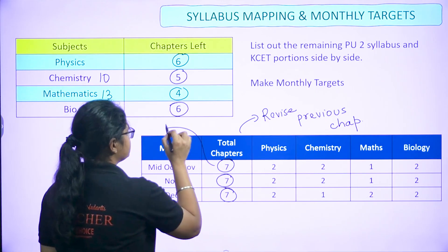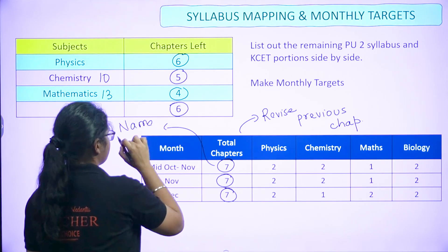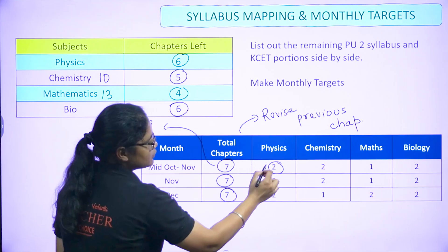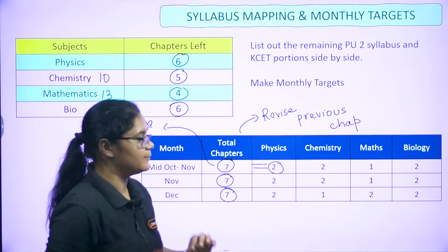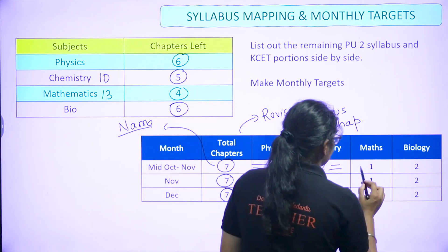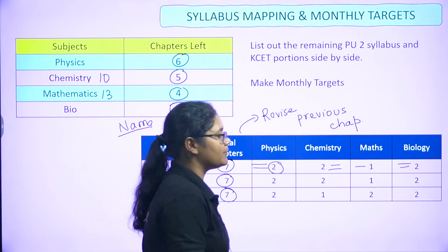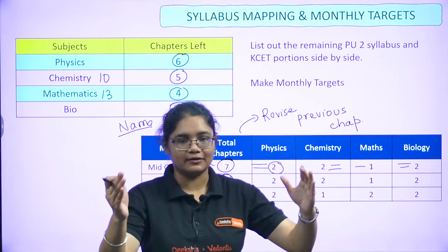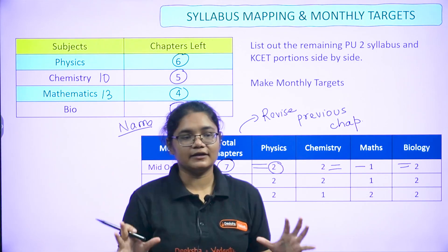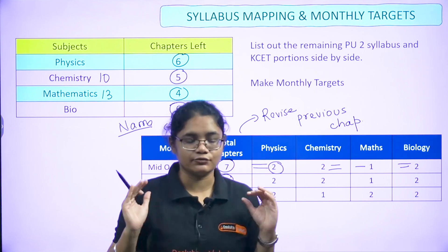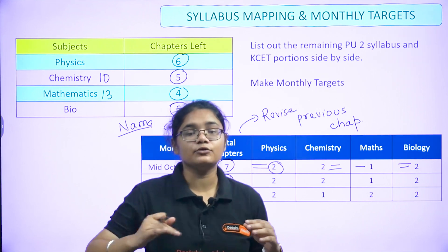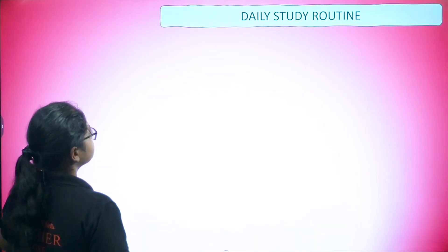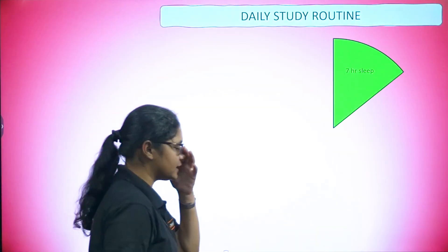List out the remaining PU2 syllabus and KCT portion side by side, then make monthly targets. Your task is to fill in the specific chapter names — for example, if targeting seven chapters in a month, assign two physics chapters, two chemistry chapters, one maths chapter, and two biology chapters. Once you have these names, you have a concrete monthly target that will help you complete your syllabus on time.